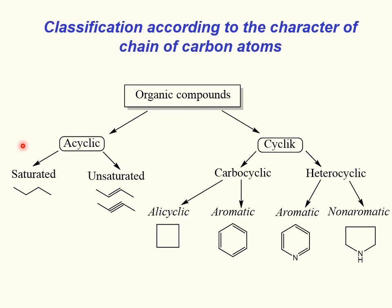Cycles can be formed only by carbon atoms or contain heteroatoms. Cyclic compounds can be aromatic and non-aromatic.